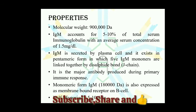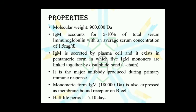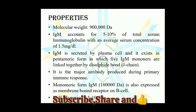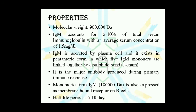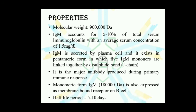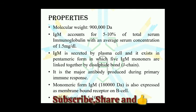Considering the properties of IgM antibodies: as the largest antibodies, their molecular weight is 900,000 dalton. They account for 5 to 10 percent of the total serum immunoglobulin concentration, and the serum concentration is 1.5 mg/mL. They are secreted by plasma cells and exist in the pentameric form.